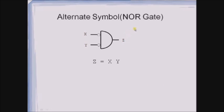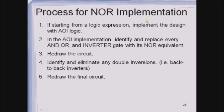This is the alternate symbol used for representing the NOR gate with inverted inputs, giving Z equals X̄ · Ȳ. For the NOR implementation process — how to realize any Boolean expression only with NOR gates — we follow a similar procedure as for the NAND gate: implement the AOI logic first, replace AND, OR, and inverter inside that AOI logic with NOR equivalents, redraw the circuit, identify and eliminate double inversions, then finalize the circuit.